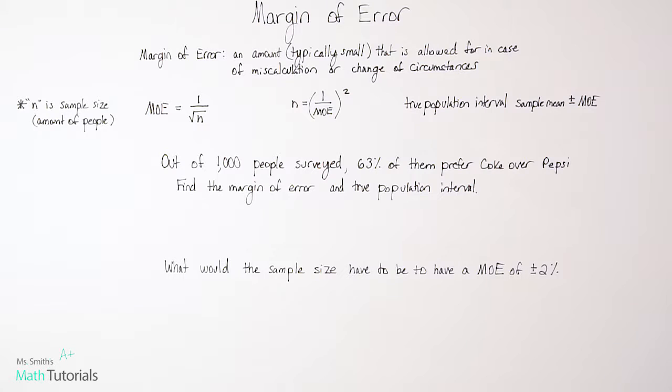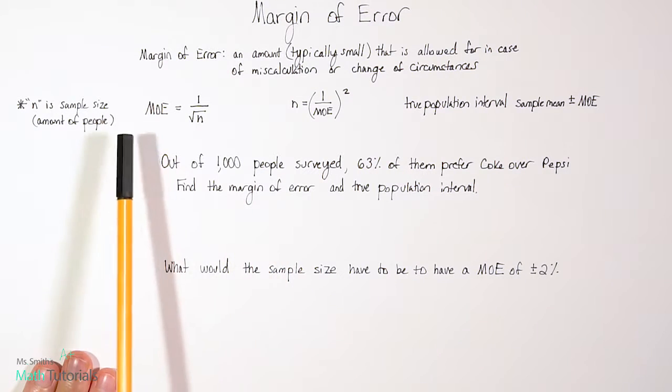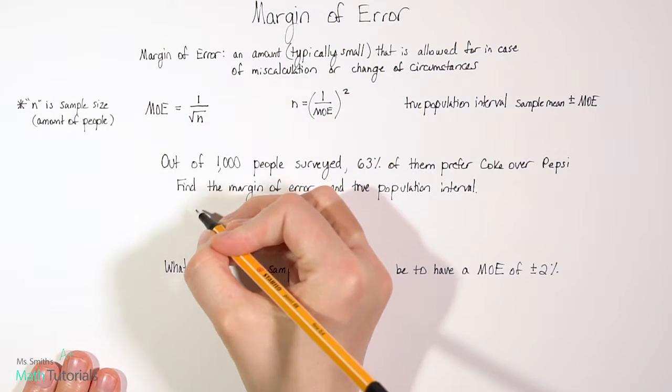Out of 1,000 people surveyed, 63% of them prefer Coke over Pepsi. Find the margin of error and the true population interval. So to find the margin of error, we're going to use this formula over here. So it's MOE, margin of error, is 1 divided by square root of the amount of people in the sample.